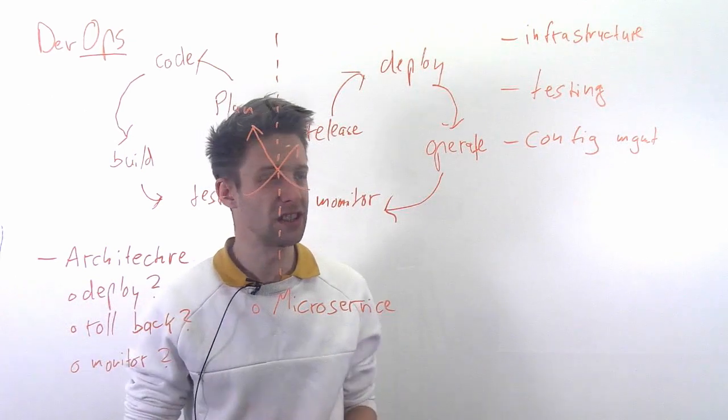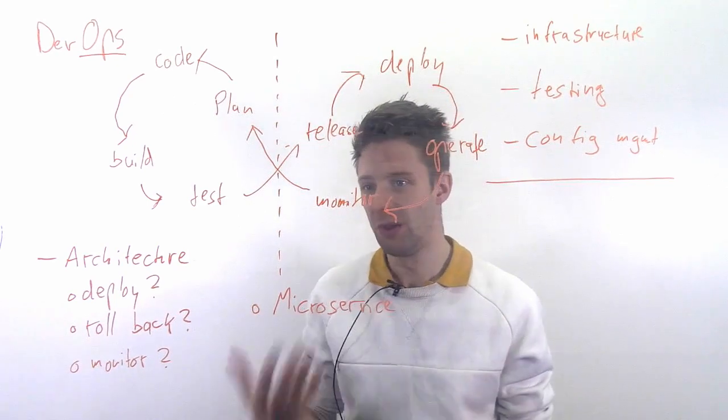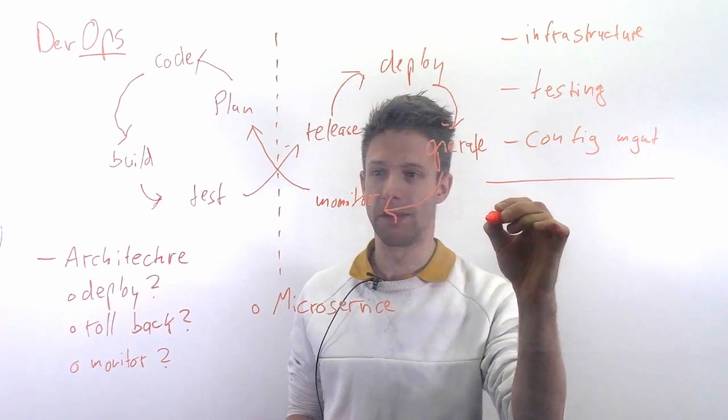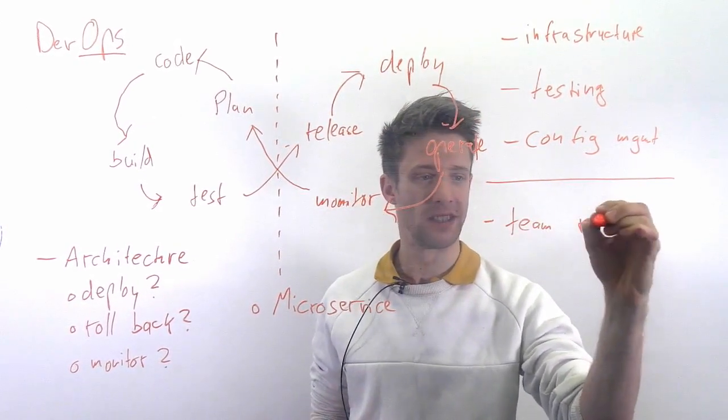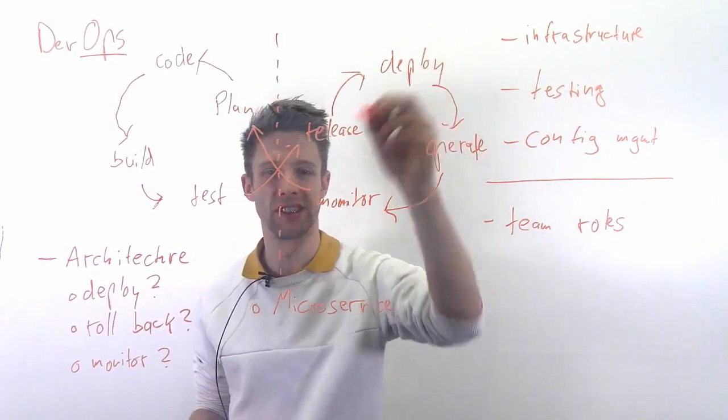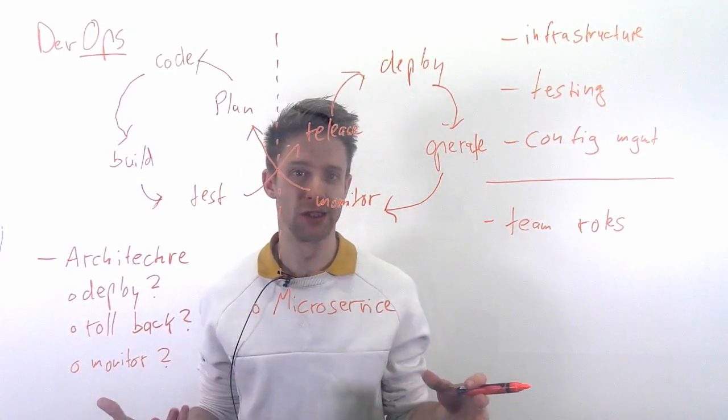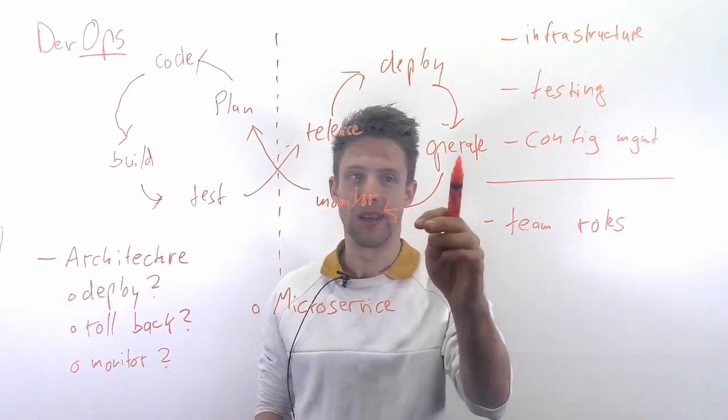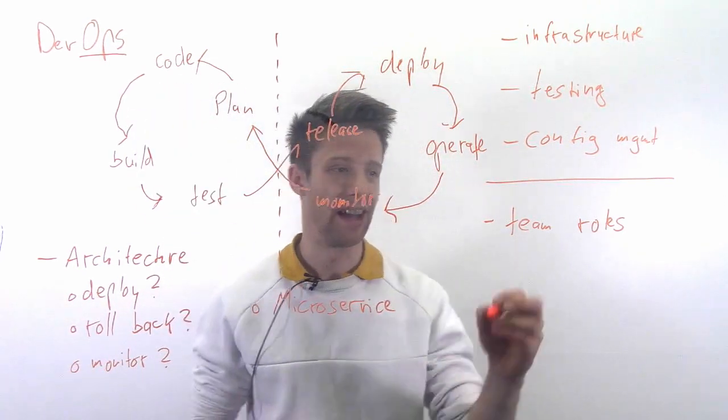Those are more the technological challenges, I would say. There are definitely also social or human challenges in here that you might want to look at. For example, if you go for a DevOps process, your team roles might change. So suddenly you have to consider how to operate things. And we have discussed that before, organizational change is very often resisted by people. So this can be very hard because they might not want to adopt this or they might not let go of their old focus that they had.